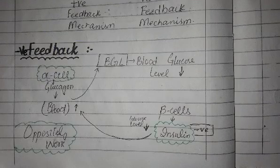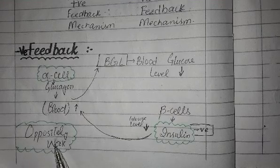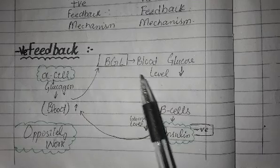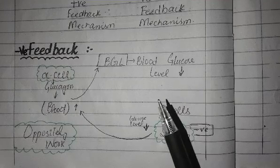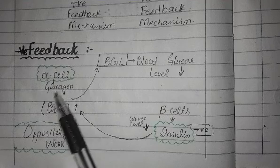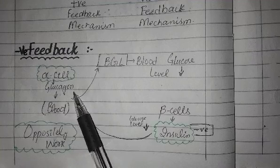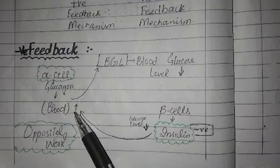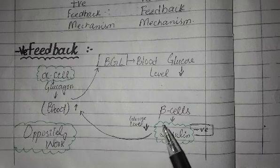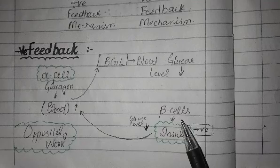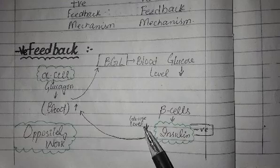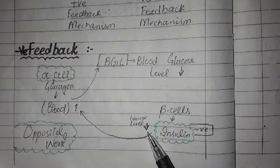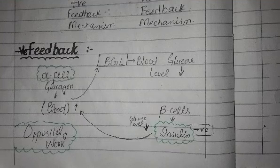In the negative feedback mechanism, two hormones work oppositely. For example, with blood glucose levels: when glucose levels fall, alpha cells cause the glucose level to rise. Then beta cells stimulate the secretion of insulin. Insulin then enters the blood and brings the glucose level back down. This is how two hormones work oppositely to regulate each other.